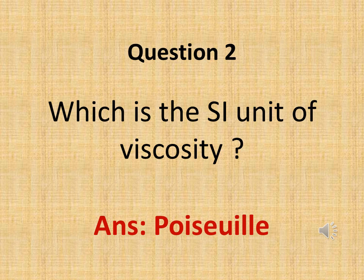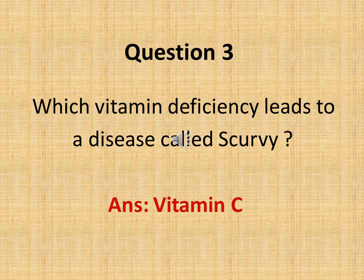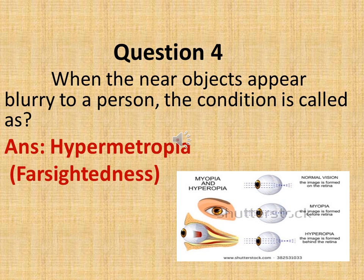The next question is: which is the SI unit of viscosity? The answer is Poise. The next question is: which vitamin deficiency leads to a disease called scurvy? The answer is deficiency of Vitamin C leads to scurvy, which is characterized by swollen joints and gums.